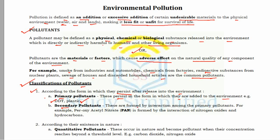Secondary pollutants are formed by the interaction among primary pollutants. For example, PAN or peroxy acetyl nitrate is formed by the interaction of nitrogen oxides (NOx) and hydrocarbons (HCs).